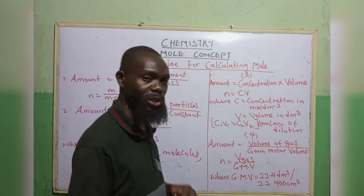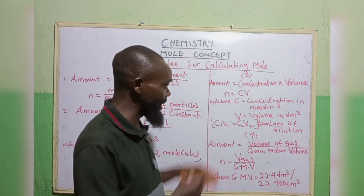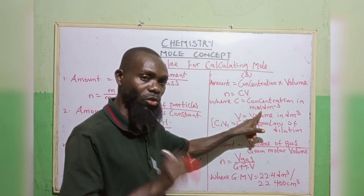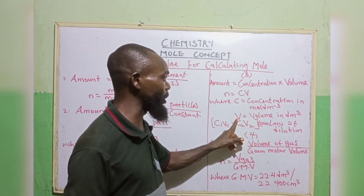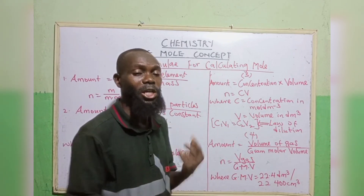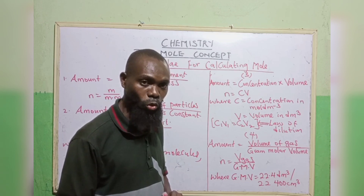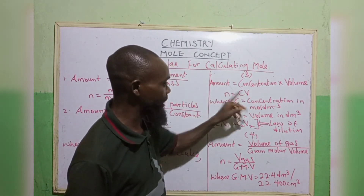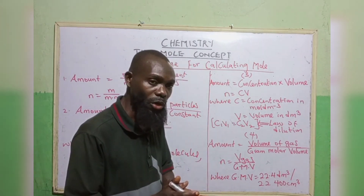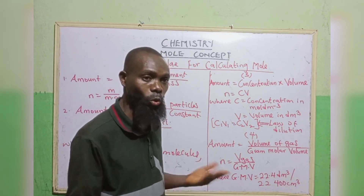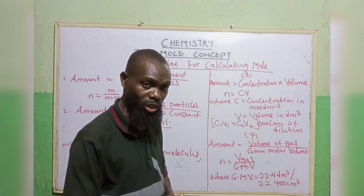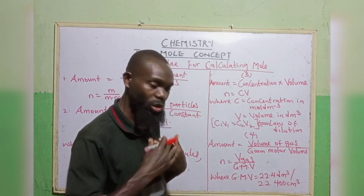Formula three: amount equals to concentration multiplied by volume, that is n equals to CV. For us to use this formula, our concentration must be in mol per dm³. The unit of volume must be in dm³. If your volume is given in cm³, it should be converted to dm³ by dividing by 1,000. This n equals to CV can be extended to C₁V₁ equals to C₂V₂, which is called the law of dilution.